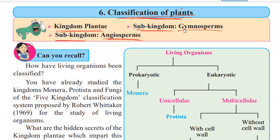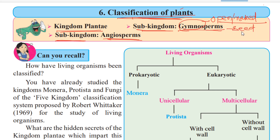What is meant by 'gymno'? Gymno means open or naked, and 'sperm' means seed. So gymnosperm means seeds that are open or naked — seeds that are not covered. These plants are included under sub-kingdom Gymnosperm within Kingdom Plantae.